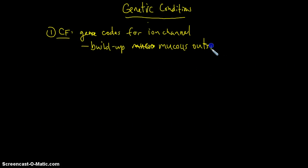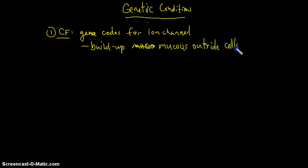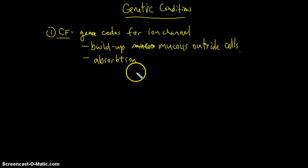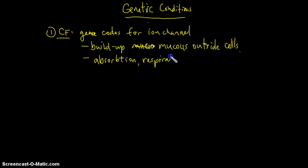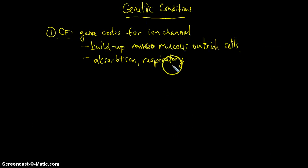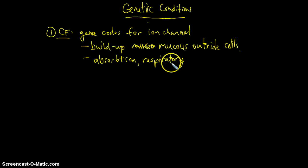Outside of cells. When that occurs it will cause a host of symptoms associated with the disease. There can be issues with absorption of nutrients — the mucus lining the intestines prevents the absorption of nutrients after food is consumed. Also there are high rates of respiratory illness. The mucus that lines the lungs is viscous, and because of that viscosity they're not able to expel bacteria-laden mucus lining the lungs, which creates high rates of infection.